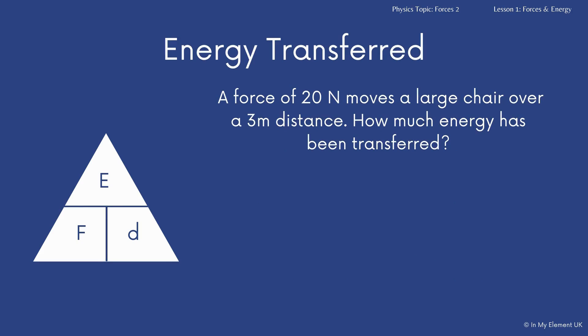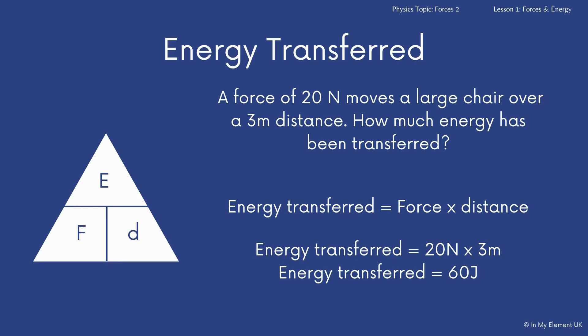Give you another example. Force of 20 newtons moves a large chair over a three metre distance. And again, they want you to calculate how much energy has been transferred. So again, energy transferred equals force multiplied by distance. You've got the force is 20 newtons and the distance is three. So you're going to do 20 times three. You should remember from the previous example that the units for energy transfer are joules. So 20 times three is equal to 60 joules.